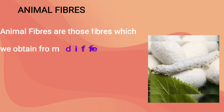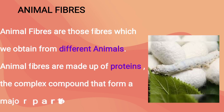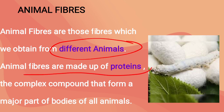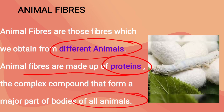Animal fibers are those fibers which we obtain from different animals. The basic unit of the animal fiber is protein, which is a complex compound that forms a major part of the bodies of all animals.